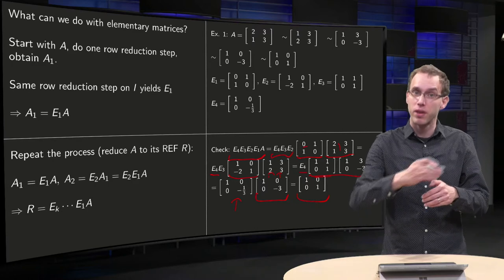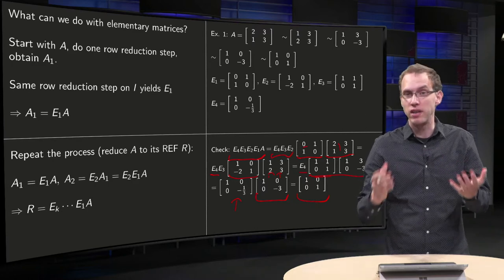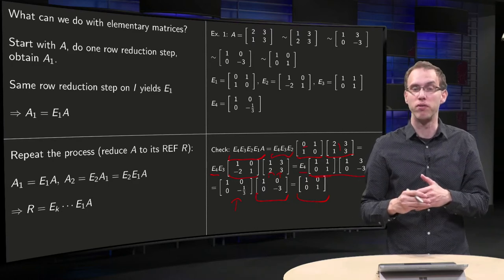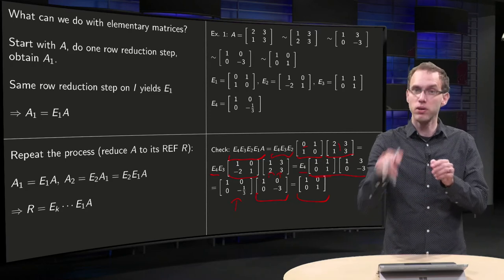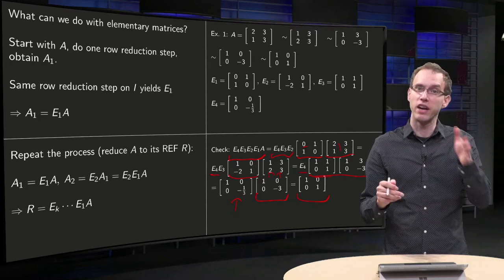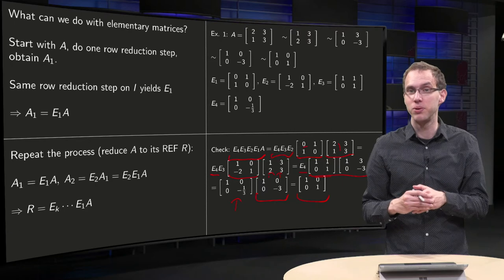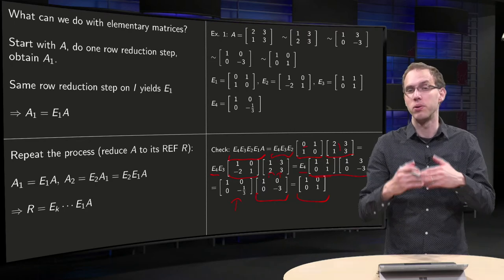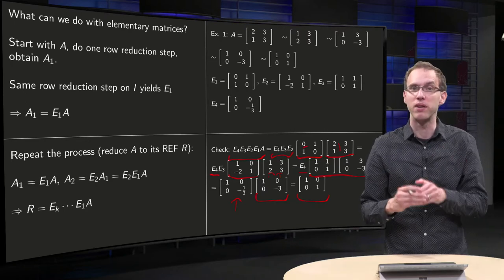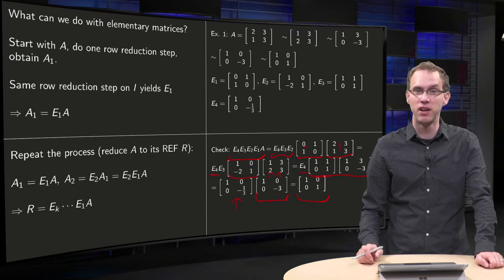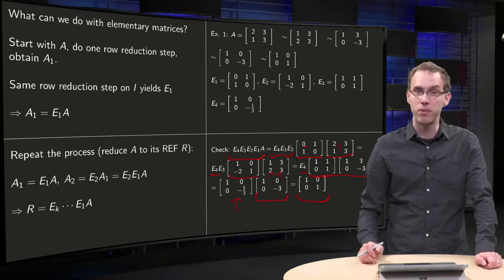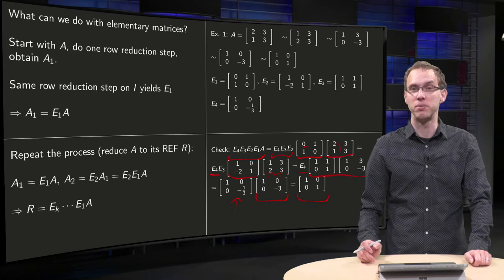You can obtain the row-reduced echelon form of A by doing the row-reduction steps, keep track of what E's you get, and then you can get the same result by multiplying A with the E's on the left.